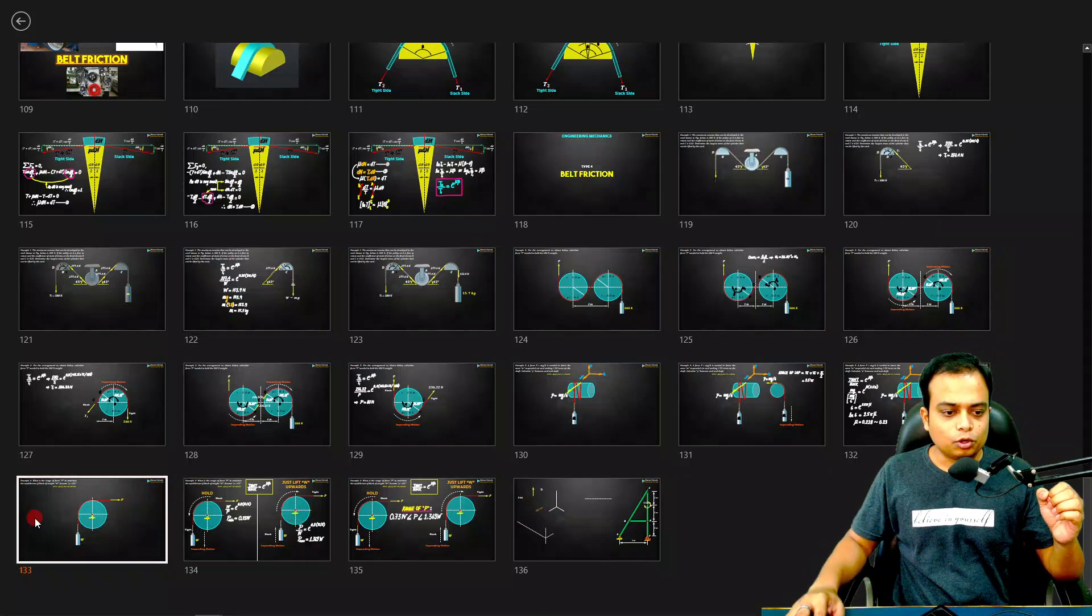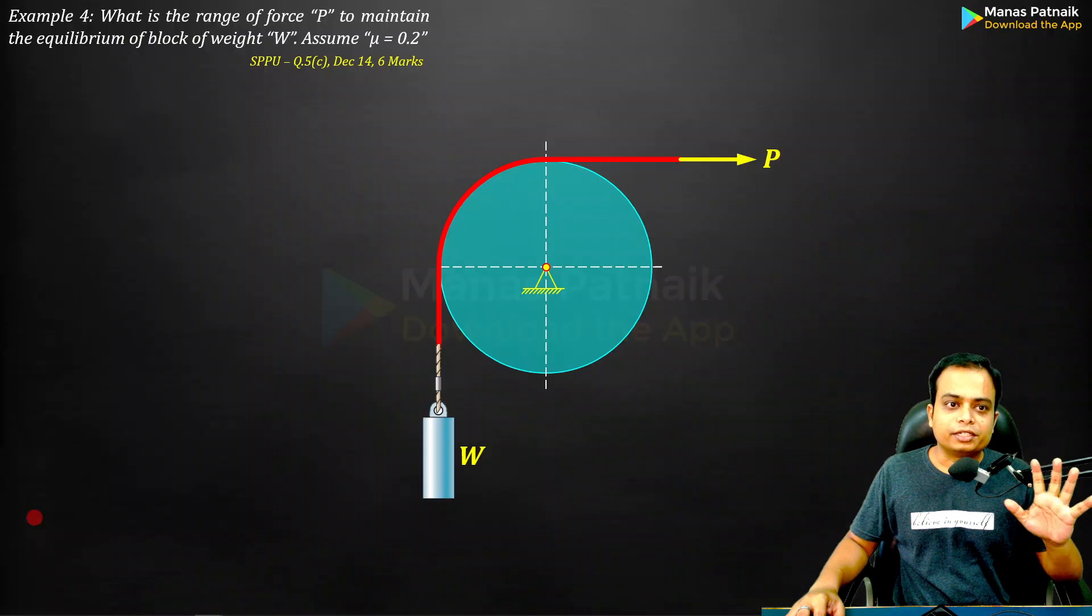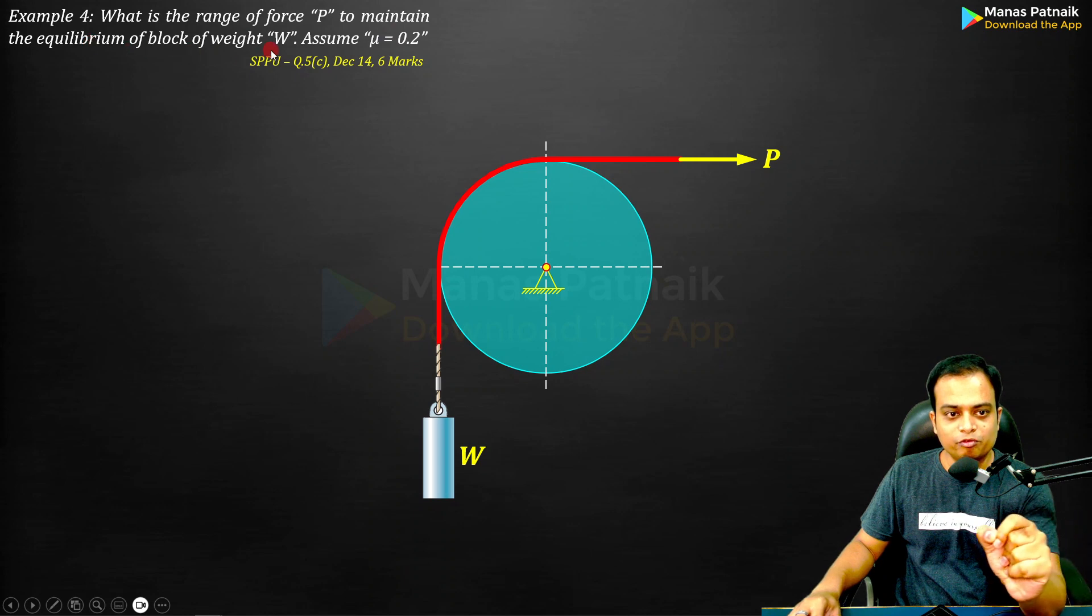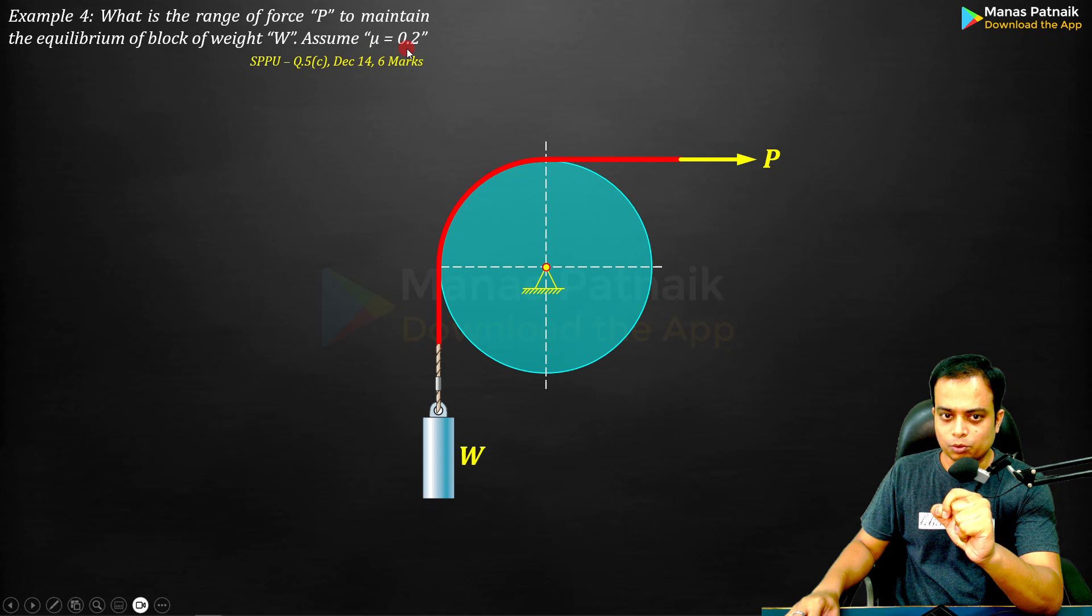Let's start with example number 4 on belt or rope friction. What is the range of force P to maintain the equilibrium of weight W? Assume mu equals 0.2. Very well, so there happens to be a drum onto which we have placed a belt or cord or rope.